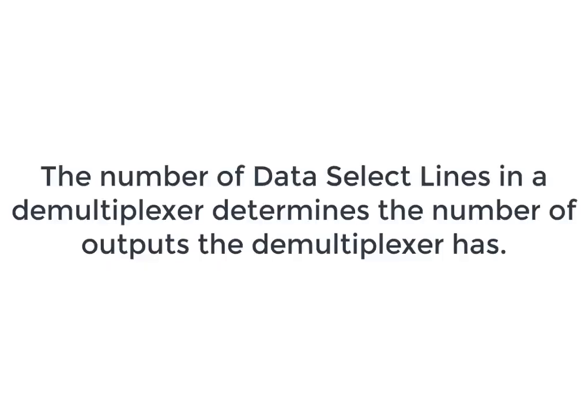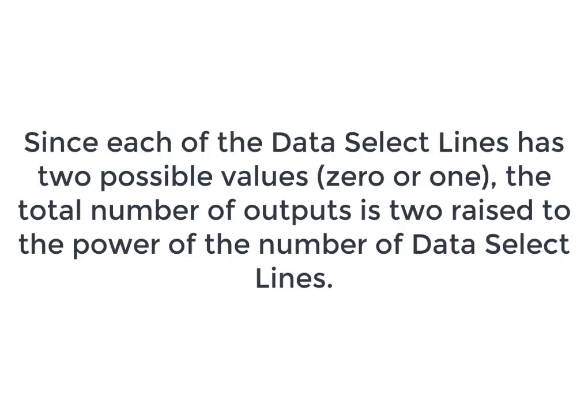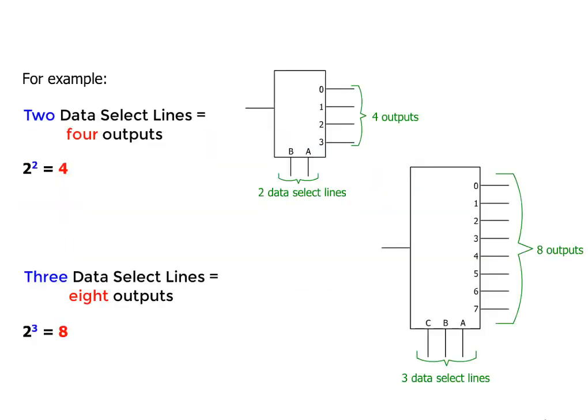The number of data select lines in a demultiplexer determines the number of outputs the demultiplexer has. Since each of the data select lines has two possible values, 0 or 1, the total number of outputs is 2 raised to the power of the number of data select lines.